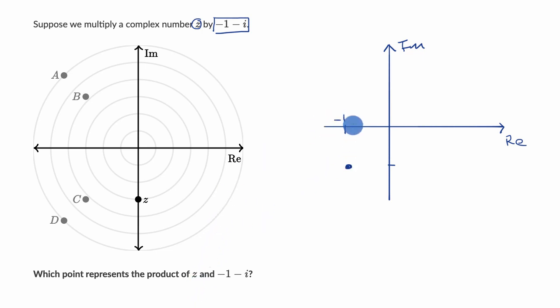And so let's think about two things: what its argument is and what its modulus is. So its argument is going to be this angle right over here. And you might already recognize that if this has a length of one, if this has a length of one,